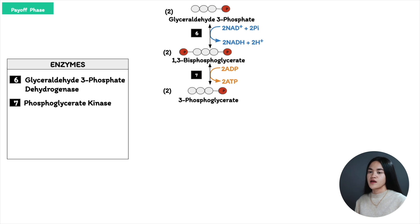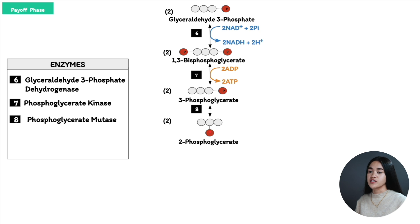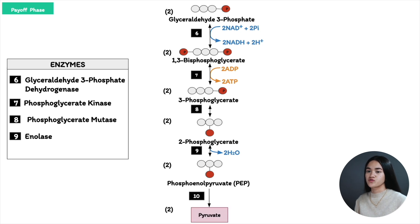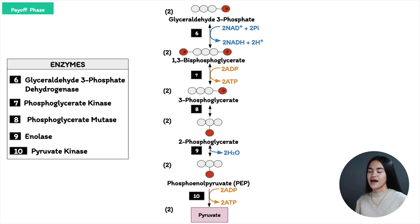From 3-phosphoglycerate, it's converted to 2-phosphoglycerate — the phosphate group is transferred from carbon 3 to carbon 2. Then from 2-phosphoglycerate, it becomes phosphoenolpyruvate, or PEP, in a dehydration reaction where a water molecule is removed. The enzyme involved is enolase. In the last step, PEP is converted to pyruvate — a phosphate group is transferred from PEP to ADP to yield an ATP molecule — catalyzed by pyruvate kinase.